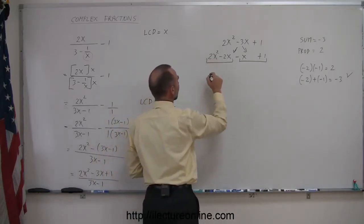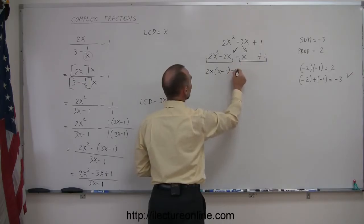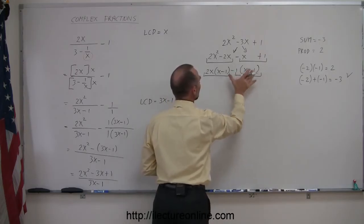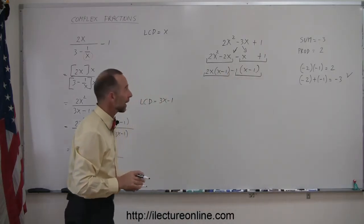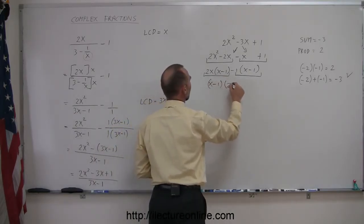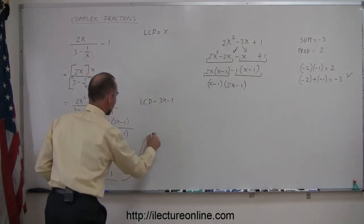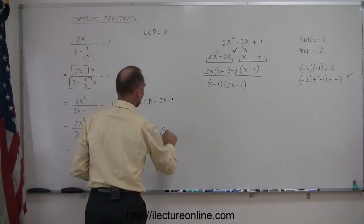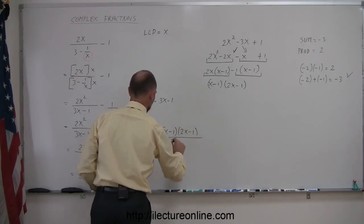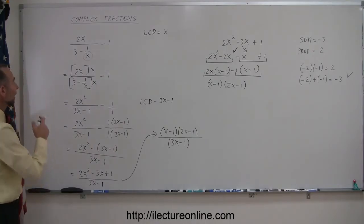I can factor out a 2x from the first two terms, which leaves me with x minus 1. If I factor out a minus 1 from the last two terms, I also get x minus 1. Since both terms have an x minus 1 in them, I can factor out the x minus 1, and I'm left with 2x minus 1. So the numerator can be written as x minus 1 times 2x minus 1, all divided by 3x minus 1, and that is the simplest form of the initial fraction.